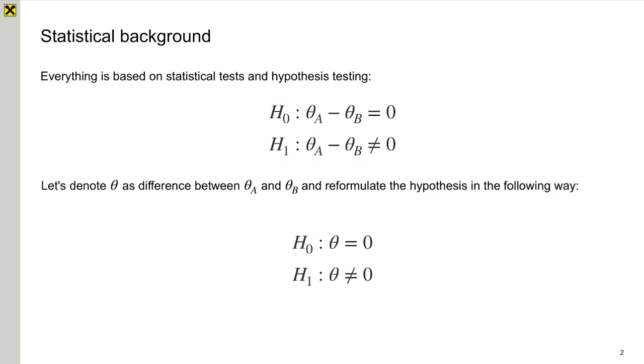In A-B testing and online experimenting, everything is based on statistical tests and hypothesis testing. The null hypothesis says that effect, which is the difference in average of two metrics, does not exist. And the alternative hypothesis says that the effect exists. It could be small or big, positive or negative, but it exists.